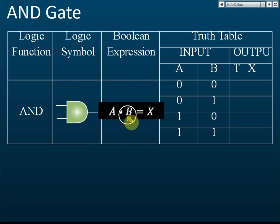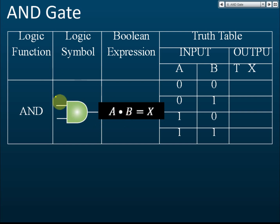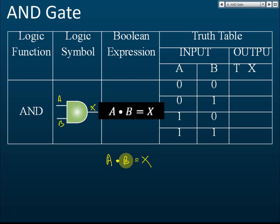For the boolean expression: A and B are the inputs and X is the output. The boolean expression for the AND gate is written as A dot B equals X — that is, A AND B equals X.